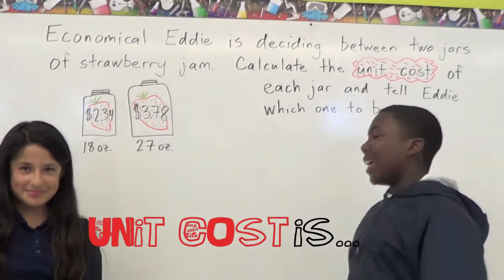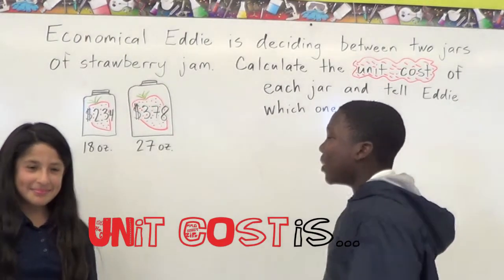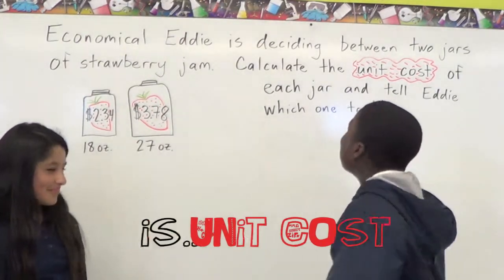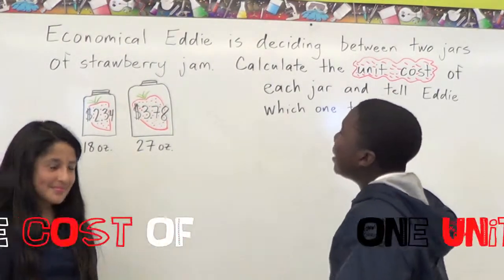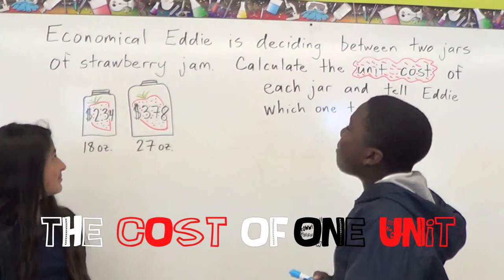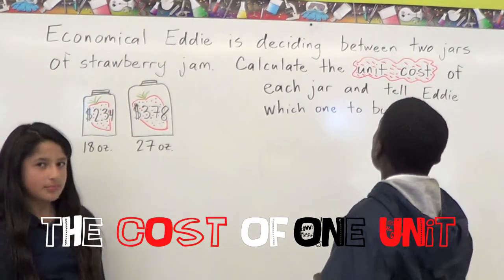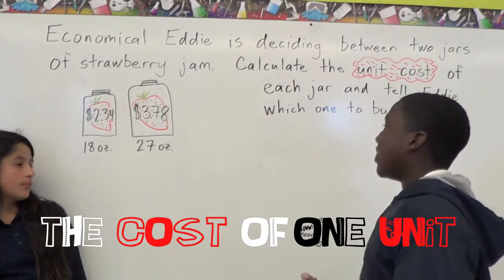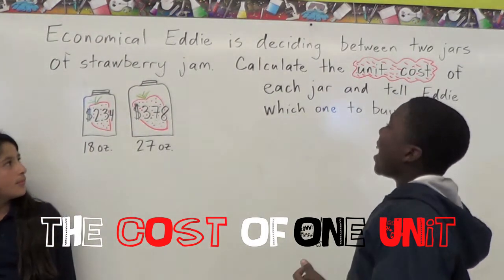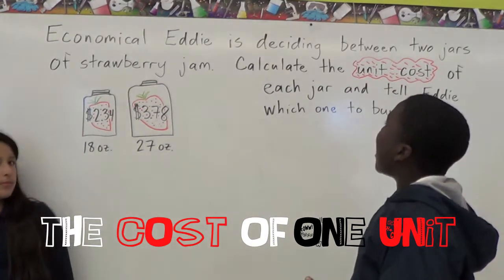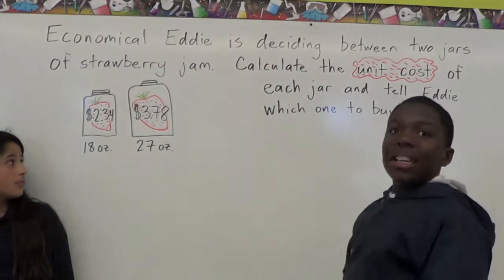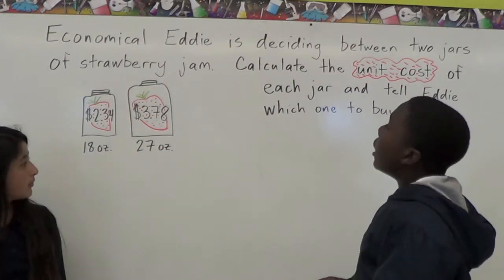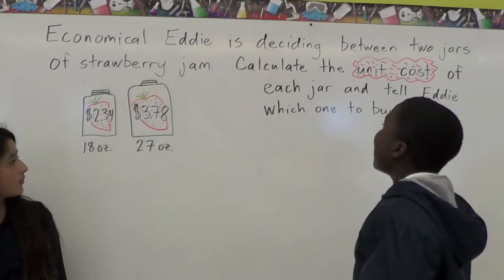Hey, I'm Dr. J, and this is my colleague Brian Baird, who says it's very casual. So, we have a unit cost problem, and here it goes: Economical Eddie is deciding between two jars of strawberry jam.